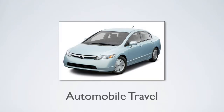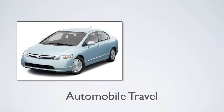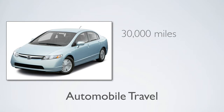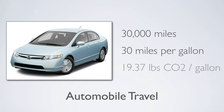Example 1. Let's take a look at a simple example involving automobile travel. Over the course of a year, a Honda Civic traveled 30,000 miles and averaged 30 miles per gallon. Using the published reference value, the emission factor for gasoline is 19.37 pounds of CO2 per gallon.